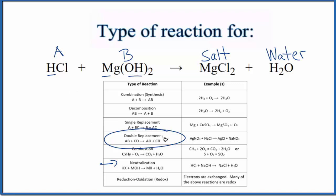So those are the types of reactions here for HCl plus Mg(OH)₂. It's a neutralization reaction, but it's also a double displacement reaction.